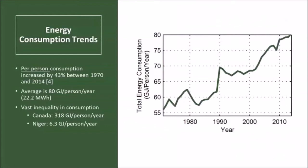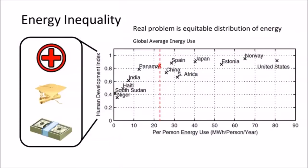We can look at not just electricity consumption but total energy consumption. It has also increased globally since the 1970s, increasing by about 43% over the time period shown. An important number to keep in mind is that the average per-person consumption is about 80 gigajoules — or about 22 megawatt hours — per person per year. This is the total energy consumed worldwide divided by the population. But within any individual country there's wide variation: Canada, with its relatively cold climate, might use about 50 times the amount of energy per person compared to Niger. These are per-person statistics, so population has already been accounted for.